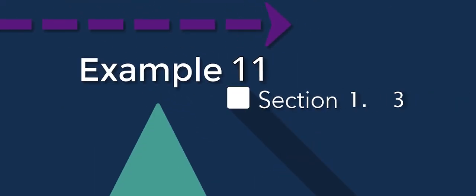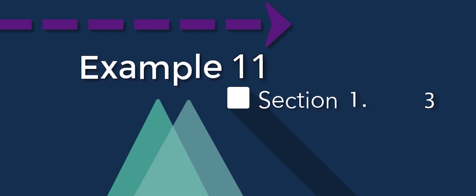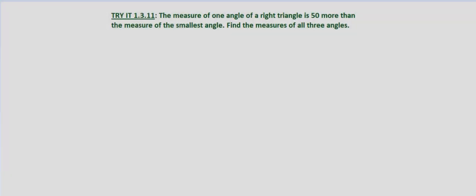We're told that the measure of one angle of a right triangle is 50 more than the measure of the smallest angle, so it's 50 degrees more than the measure of the smallest angle, and we're asked to find the measure of all three angles.